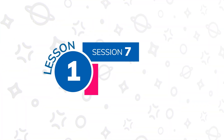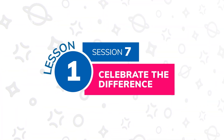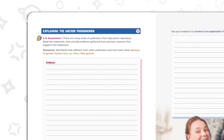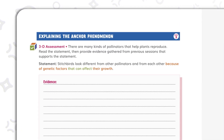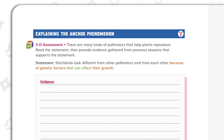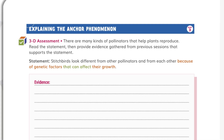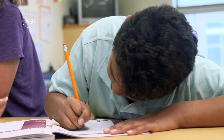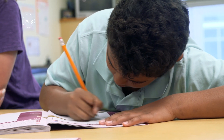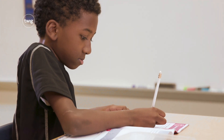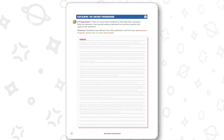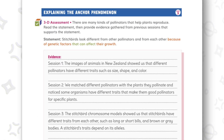All this student sense-making comes together in the final session of the lesson, where students construct explanations for the statement: Stitchbirds look different from other pollinators and from each other because of genetic factors that can affect their growth. Students can now draw on everything they've done across the lesson, referring back to their notes in their phenomena tracker, to compile relevant evidence.